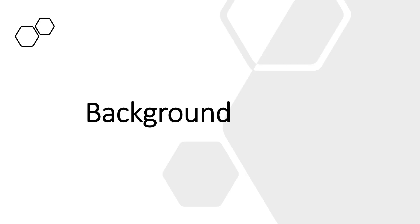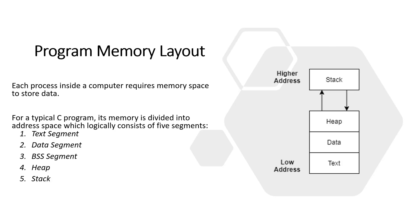Some background to understanding this exploit. Each process inside a computer requires memory space to store data. For a typical C program, memory is divided into address space which is logically consisting of five segments: the text segment,